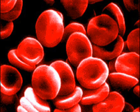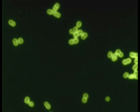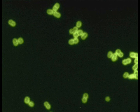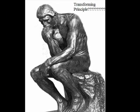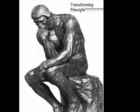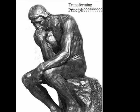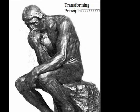When Griffith extracted blood from the mice that were injected with the R and dead S serum, he discovered that all of the R bacteria had acquired capsules and had become S. When bred, these bacteria stayed in the S form for many generations. He hypothesized that some sort of transforming principle from the dead S strain converted the live R strain into the S strain.